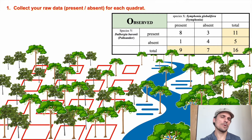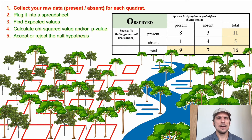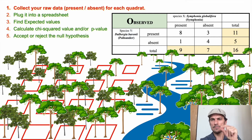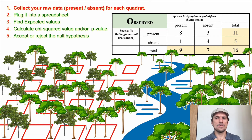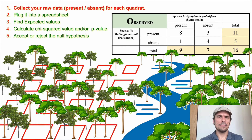Next up, we're going to take this raw data collected in the field and plug it into a spreadsheet. There's a little bit of math involved — moving numbers around and calculations — but it really is all just adding, subtracting, multiplying, and dividing. Let's follow this order of how we do it. Let's go.